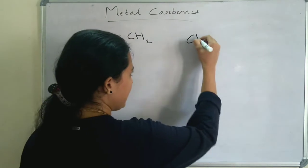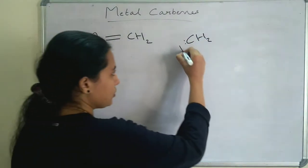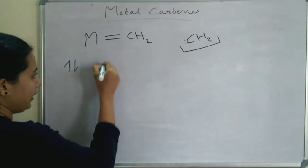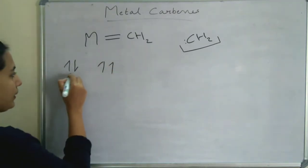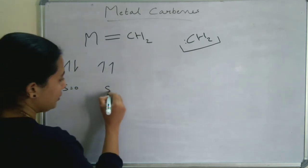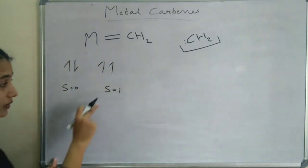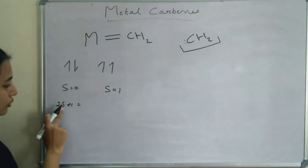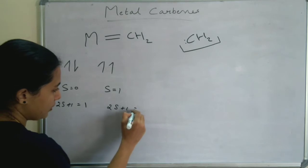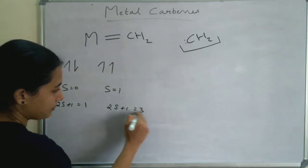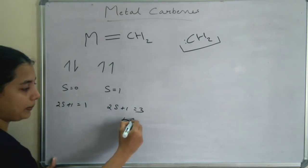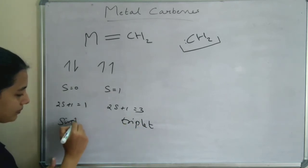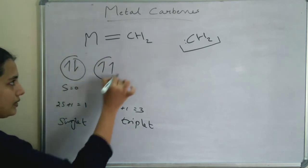So what is a carbene? CH2 with two electrons. This is a carbene, and these two electrons can be either in opposite directions or in the same direction. When opposite, S=0; when same direction, S=1. Spin multiplicity 2S+1: for S=0, it equals 1 (singlet); for S=1, it equals 3 (triplet). So singlet and triplet carbene are the two types.